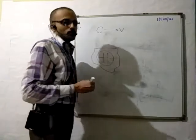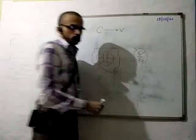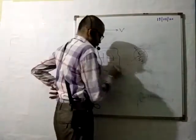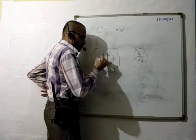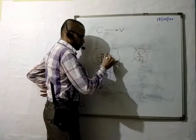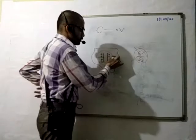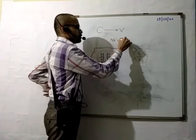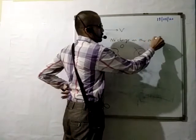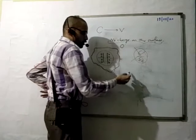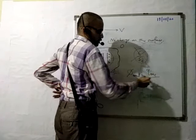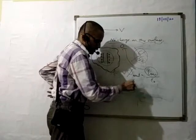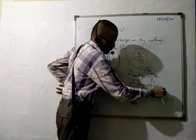The closed surface is considered. You can see that the capacitor carries charge — but where will the charge be? The charge will be on the capacitor plates. The surface itself has zero charge — no charge on the surface. So the total flux phi = Q_enclosed / epsilon_naught. If the enclosed charge is zero, then the flux will also be zero.